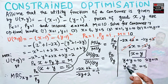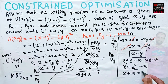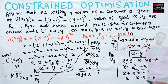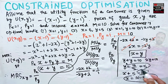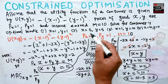Plug y = 5 back into the budget constraint: x + 5 = 10. Transposing gives x = 10 minus 5 = 5. So the optimal value of x is also 5. The optimal bundle is x = 5 and y = 5, so the correct answer is the second option.